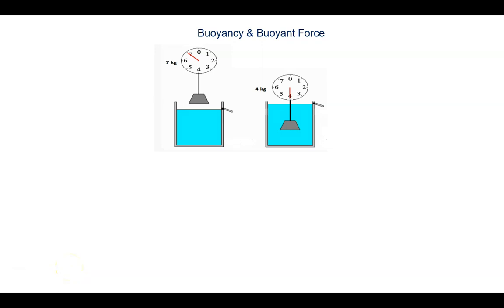Buoyancy and buoyant force. We will start with an activity. Let an object have a mass of 7 kg when in the air, weight in air is given to us as 7 kg.